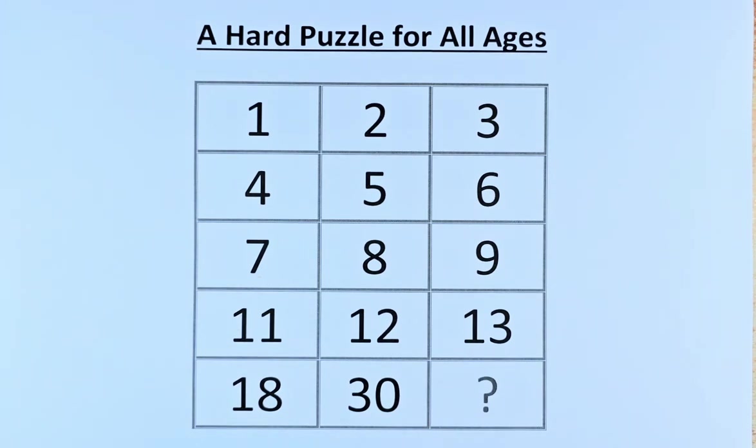Third row, 11. Sorry, the fourth row is 11, 12, 13. And in the final row, we have 18, 30, and a question mark. So what is the number represented by the question mark? So without further ado, let's try to solve this problem.